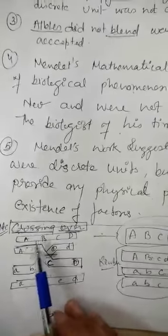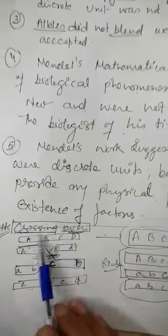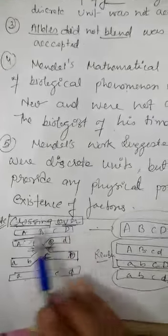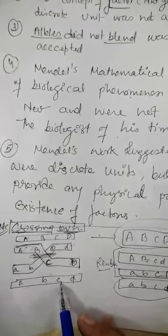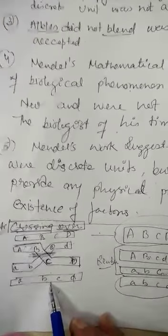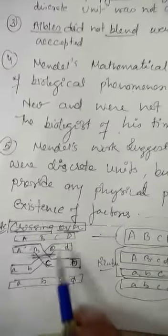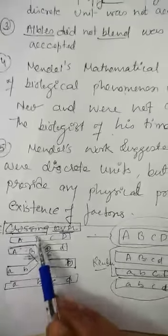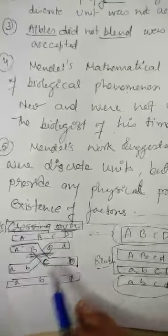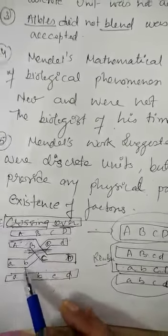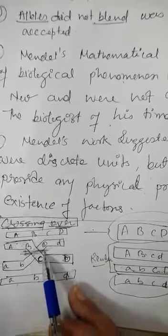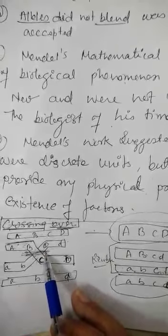So children, now we are here recalling the crossing over. In crossing over, I have only drawn one step — the stage of pachytene in which the crossing over is going on. Look at here: this is one chromosome with capital genes A B C D written, and its homologous chromosome has small a b c d. Once the crossing over takes place, this is the chiasma.